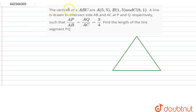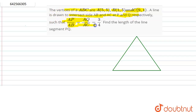Hello friends. The question is: the vertices of triangle ABC are A(5,5), B(1,5) and C(9,1), and a line is drawn to intersect AB and AC at P and Q. The ratio given is AP/AB = AQ/AC = 3/4. We have to find the length of line segment PQ.